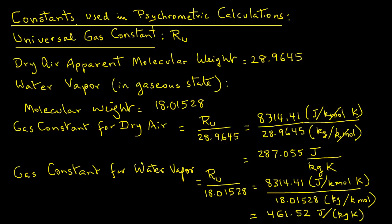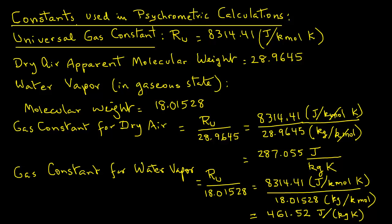So you have seen three gas constants so far. One is the universal gas constant, which is 8314.41 joules per kilomole kelvin. We have the gas constant for dry air, which is 287.055 joules per kilogram kelvin. And the gas constant for water vapor, which is 461.250 joules per kilogram kelvin. We will be using some of these constants later, so you want to keep them in mind.